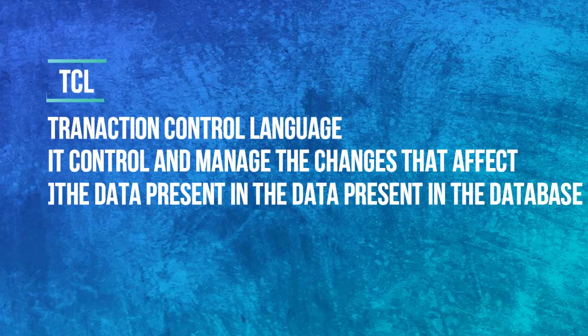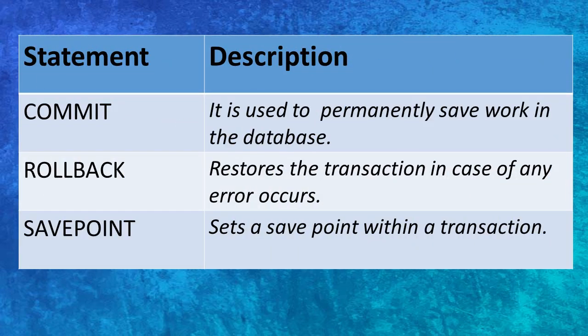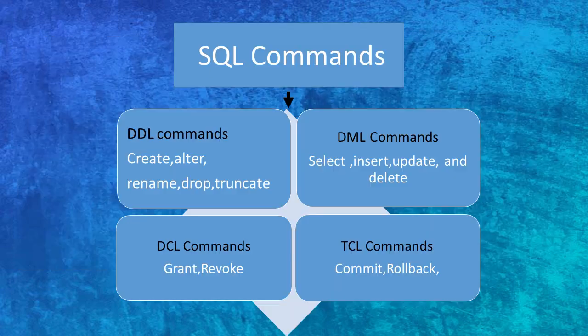Next is TCL — Transaction Control Language. It deals with transaction control. COMMIT is a permanent save of data. ROLLBACK is used to undo changes when you do not want to save the data. SAVEPOINT is used to mark a point so you can roll back to that specific point. To summarize: DDL includes CREATE, ALTER, RENAME, DROP, and TRUNCATE; DML includes SELECT, INSERT, UPDATE, and DELETE; DCL includes GRANT and REVOKE; and TCL includes COMMIT, ROLLBACK, and SAVEPOINT.